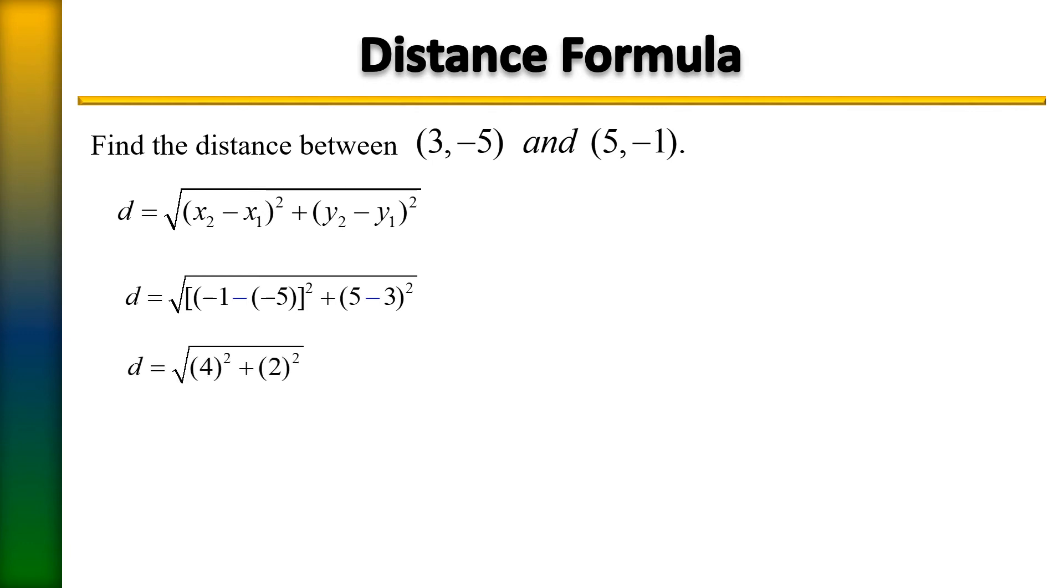So we have 4 squared plus 2 squared. 4 squared is 16, 2 squared is 4. Let's add those two numbers together. That's going to give me 20.